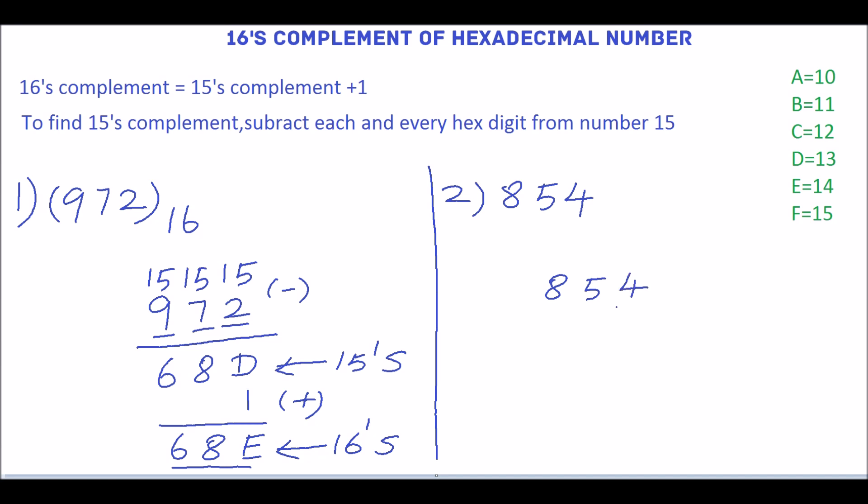Subtract the digits 4, 5, 8 individually from the number 15 to get the 15's complement. Subtract this. 15 minus 4 is 11. 11 is equivalent to B. 15 minus 5 is 10. 10 is equivalent to A.